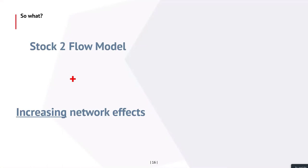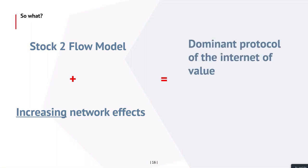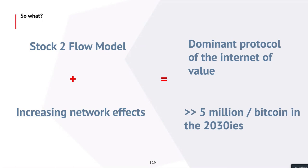So what's the conclusion? The stock-to-flow model is not complete — I'm adding increasing network effects. With increasing network effects, we will have the Bitcoin protocol and token becoming the dominant protocol of the Internet of Value. It will be much, much larger than just the store-of-value use case, which at 100 trillion dollars over roughly 20 million Bitcoin leads to $5 million per Bitcoin. There will be many, many other use cases. It will take a while because the system needs to work through it. The perspective is: increasing feedback loops, becoming a dominant standard, and exploding in value and price.